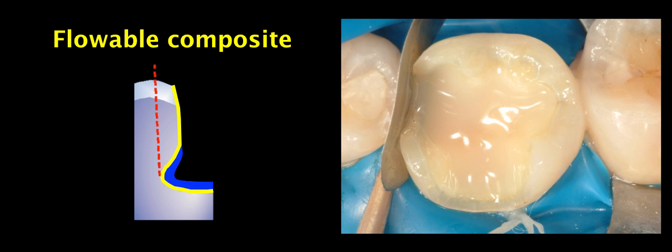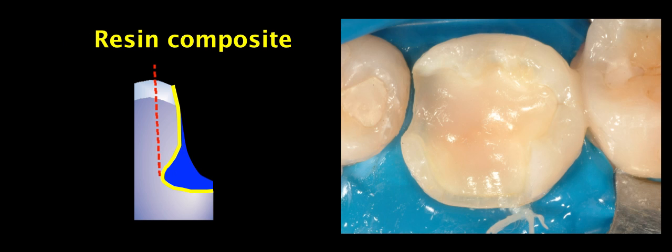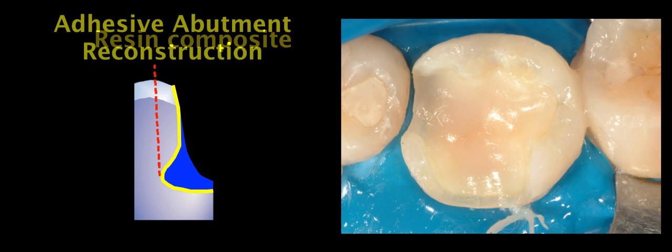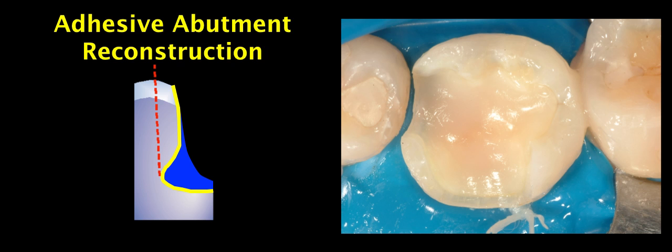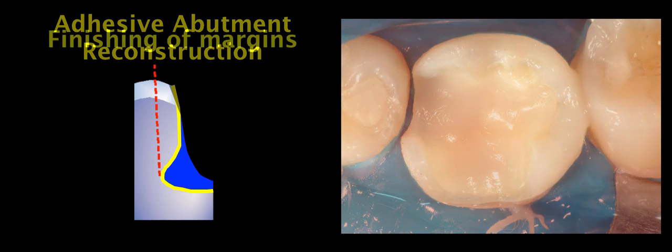Then in order to adhesively reconstruct the abutment we place our composite accordingly to our needs. Here we place a thin layer of flowable composite as a first layer and then regular composite to fill in the undercuts and cover the flowable composite. This is what I like to call adhesive abutment reconstruction. We've used our bonding agent and resin composite not only to cover the dentin but also to fill the undercuts and adhesively reconstruct our abutment.